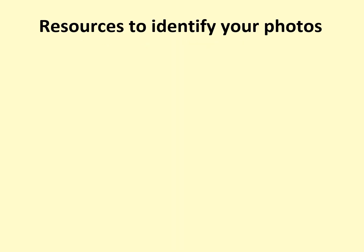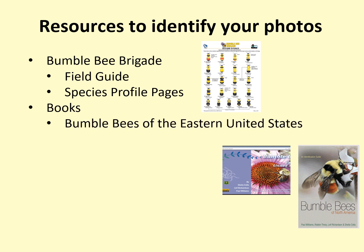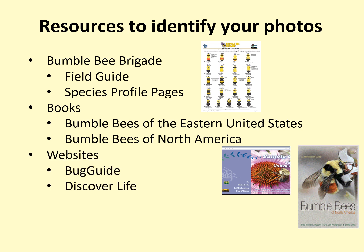There are many good resources available to help identify bumblebees. On the project website, go to the resources tab to find links to them. This includes the Bumblebee Brigade field guide, which shows the most common morphs in Wisconsin and is available for download. A more in-depth resource is the species profile pages on the project website, with detailed descriptions and many photographs of each species. We strongly recommend using either Bumblebees of the Eastern United States, which can be purchased as a book or downloaded for free as a PDF, or Bumblebees of North America, which can be purchased online or at many bookstores. Other online projects like Bug Guide, Discover Life, Bumblebee Watch, and Bee Spotter also provide identification resources.